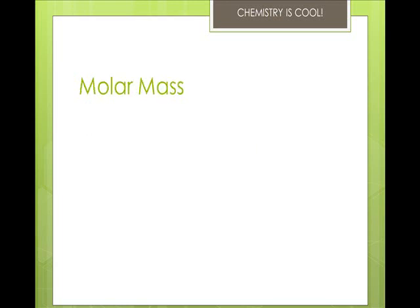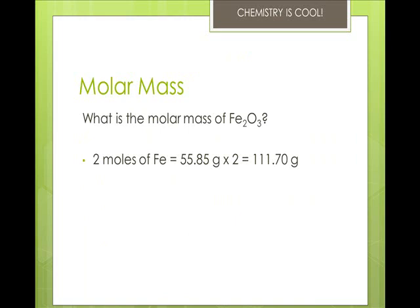Same thing with this one. What is the molar mass of iron 2, or iron 3 oxide? So 2 moles of iron is 55.85 times 2. That gives us 111.70 grams. 3 moles of oxygen at 16 grams each gives us 48 grams.